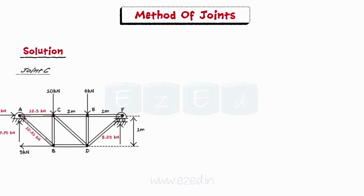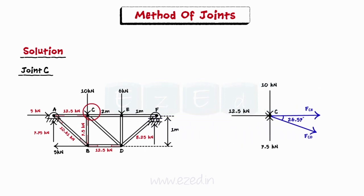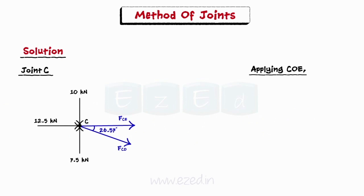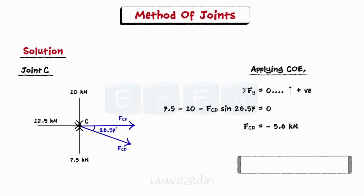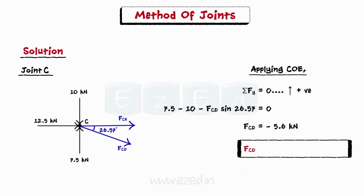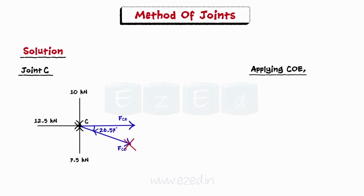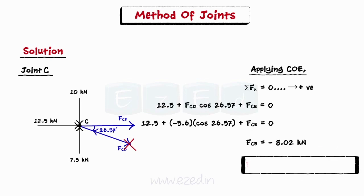We now isolate joint C as it has two unknown members CE and CD. We initially assume the members to be in tension and apply conditions of equilibrium to joint C. Equating the summation of all forces in the y direction to zero, the force in member CD is 5.6 kN, compressive in nature. Then, equating the summation of all forces in the x direction to zero, the force in member CE is 8.02 kN, compressive in nature.